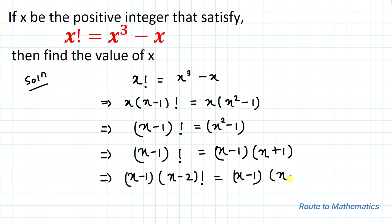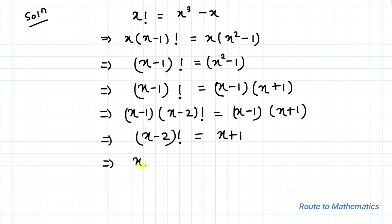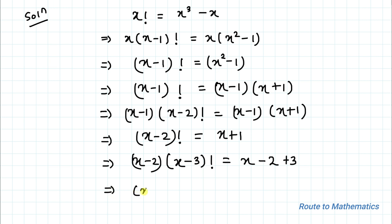We can further write (x minus 1) as (x minus 2) multiplied with (x minus 3) factorial, and (x plus 1) can be written as (x minus 2) multiplied with (x minus 3) factorial. Taking the (x minus 2) term to the left-hand side gives minus (x minus 2) equals 3.